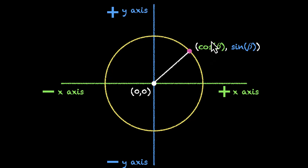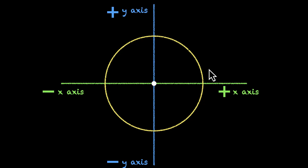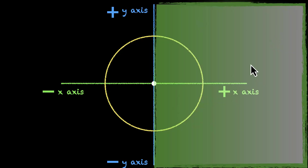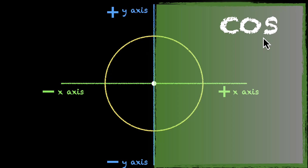Let's look at cos first. Cos comes from the x-coordinates. Where on this map do we have points which have x-coordinates as positive? Think about it. It's this region — the first quadrant and the fourth quadrant. Pick any point in these two quadrants and you'll get the x-coordinate as positive. So this means this region has cos positive.